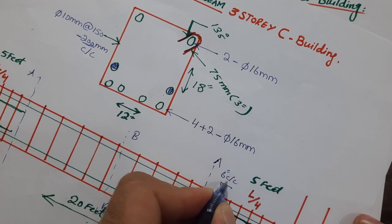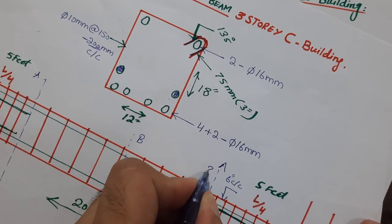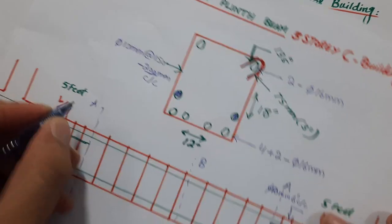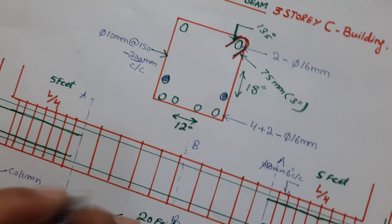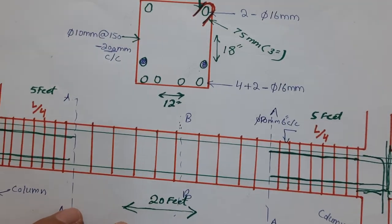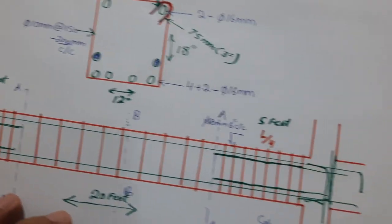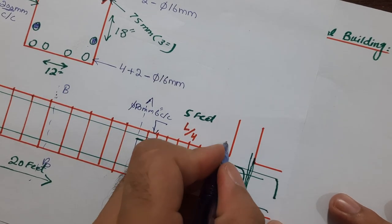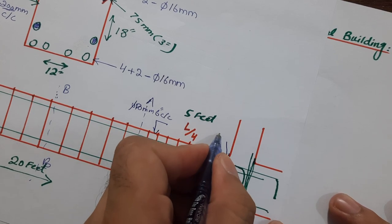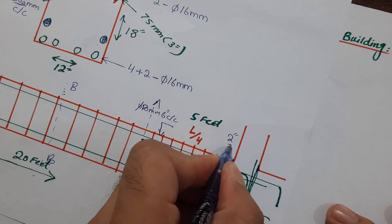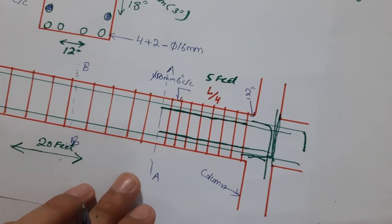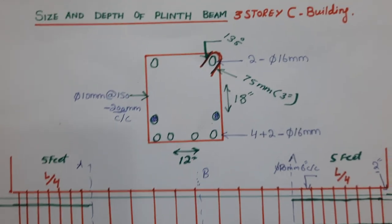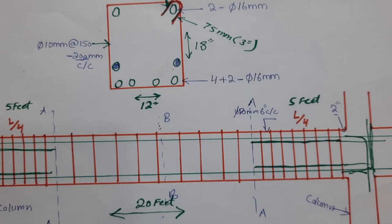In section BB, you can increase the spacing up to 200 millimeters — or 6 inches center to center — with 10 millimeter diameter stirrups. The same applies on the other side. In the L/4 zone we keep closer spacing because we have extra steel rods and negative bending moment. Also, remember: the first stirrup from the support should be placed at a minimum spacing of 2 inches.